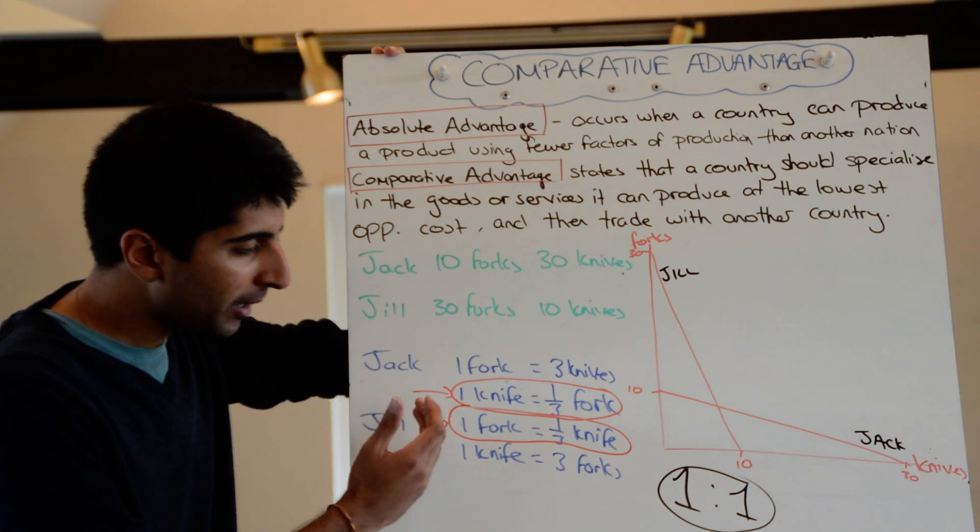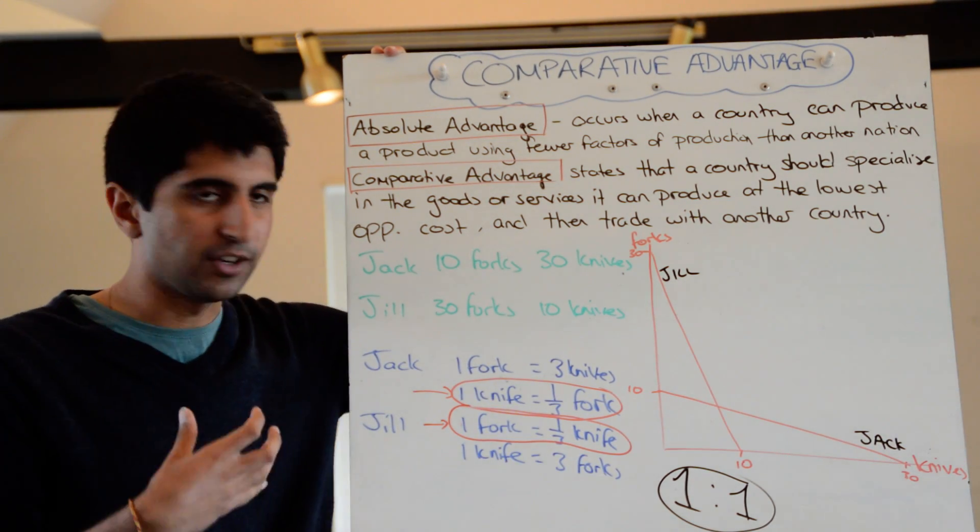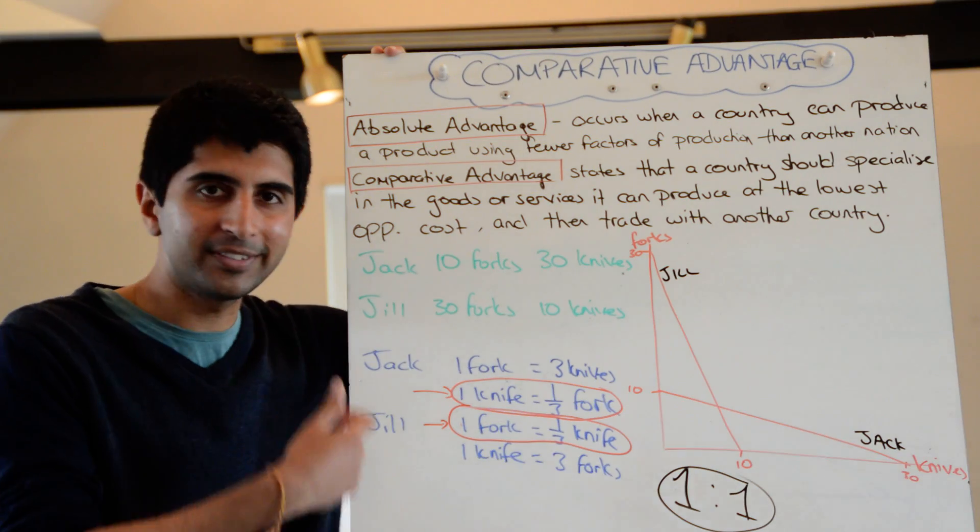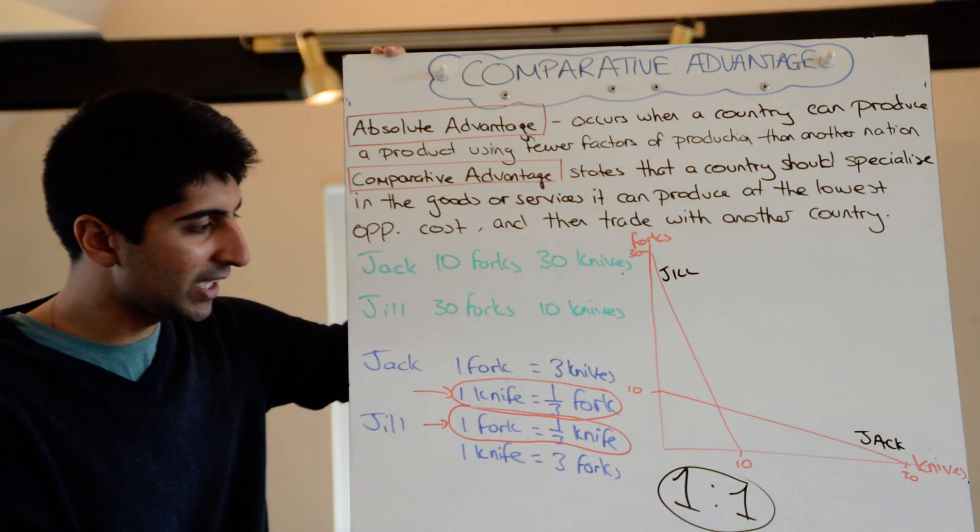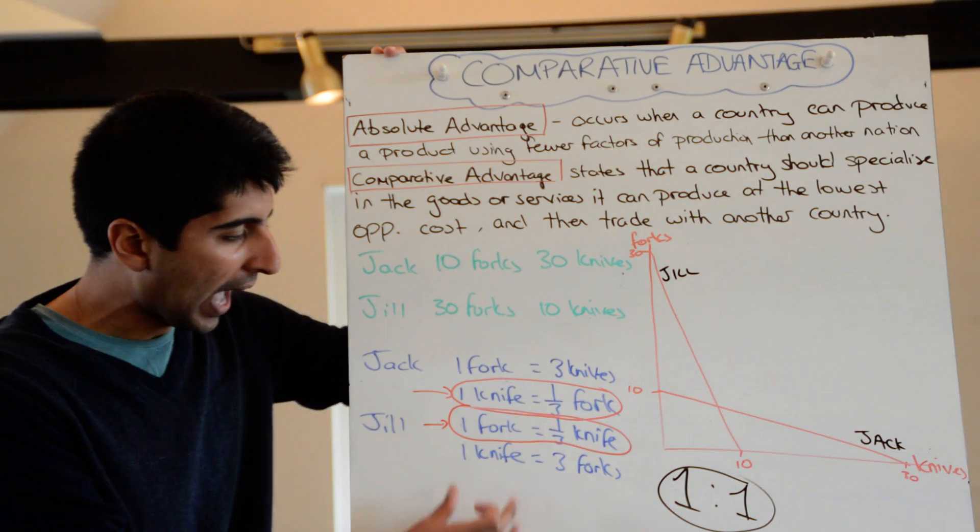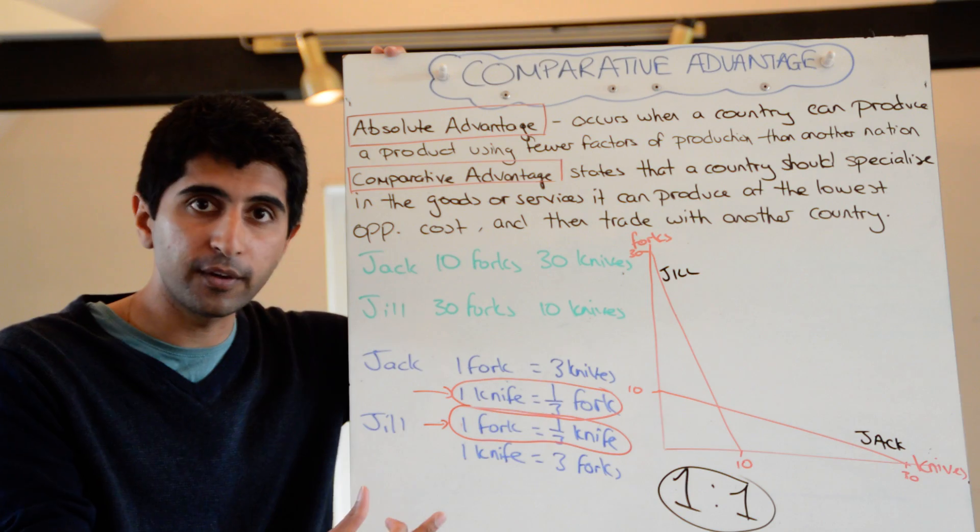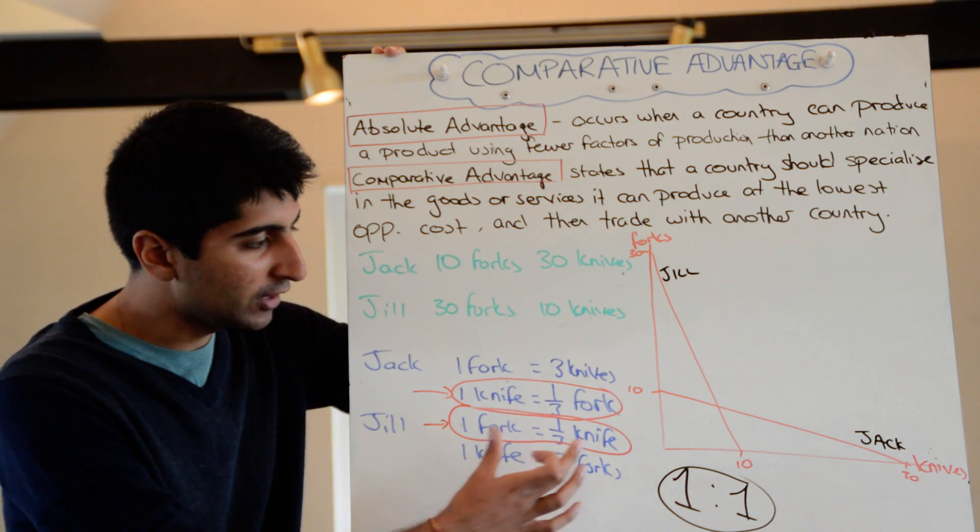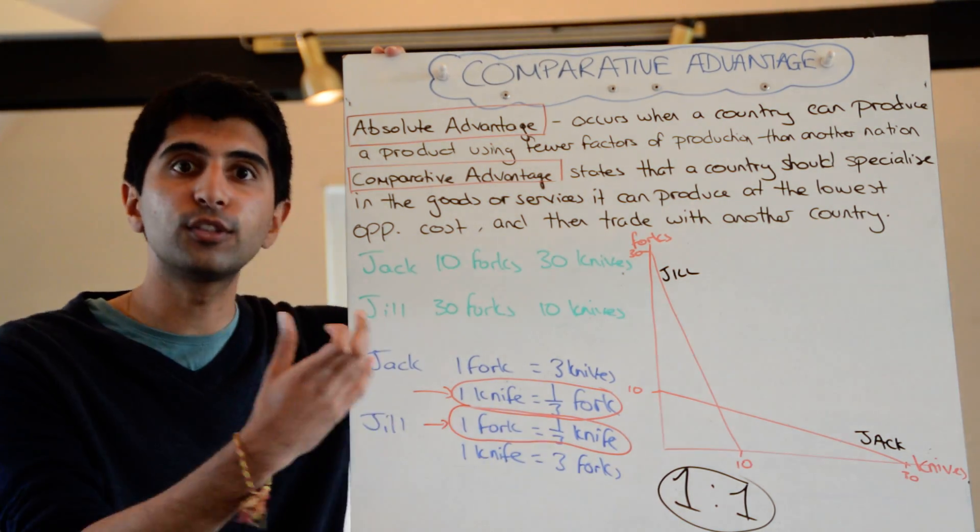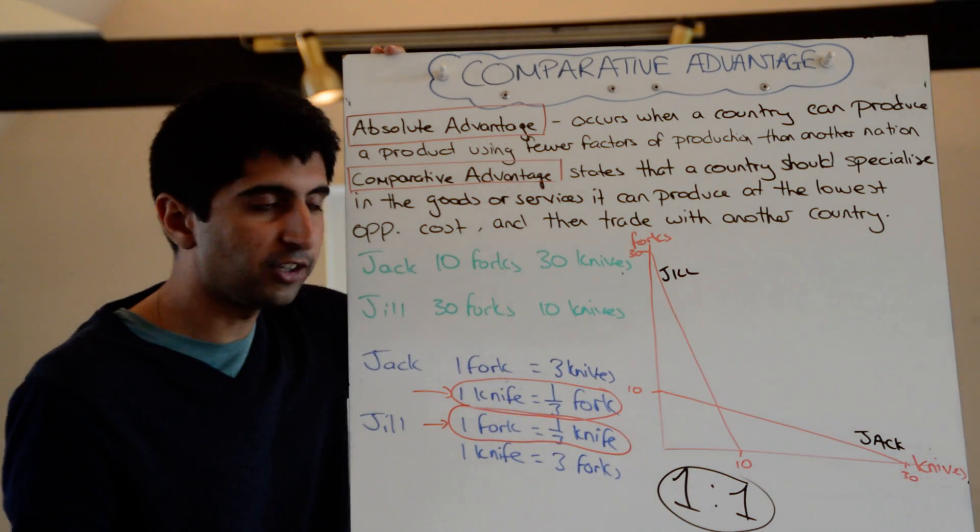Jill, by specializing in forks, she would have only got a third of a knife back herself if she sacrificed a fork. Whereas now, by selling a fork to Jack, she can get back one knife in return. So that's a good rate of return for her. And in terms of buying a knife where she doesn't have the advantage, she didn't produce any knives at all, she could actually buy one knife instead of having to sacrifice three forks in return. So this benefits both parties, this one-to-one relationship.